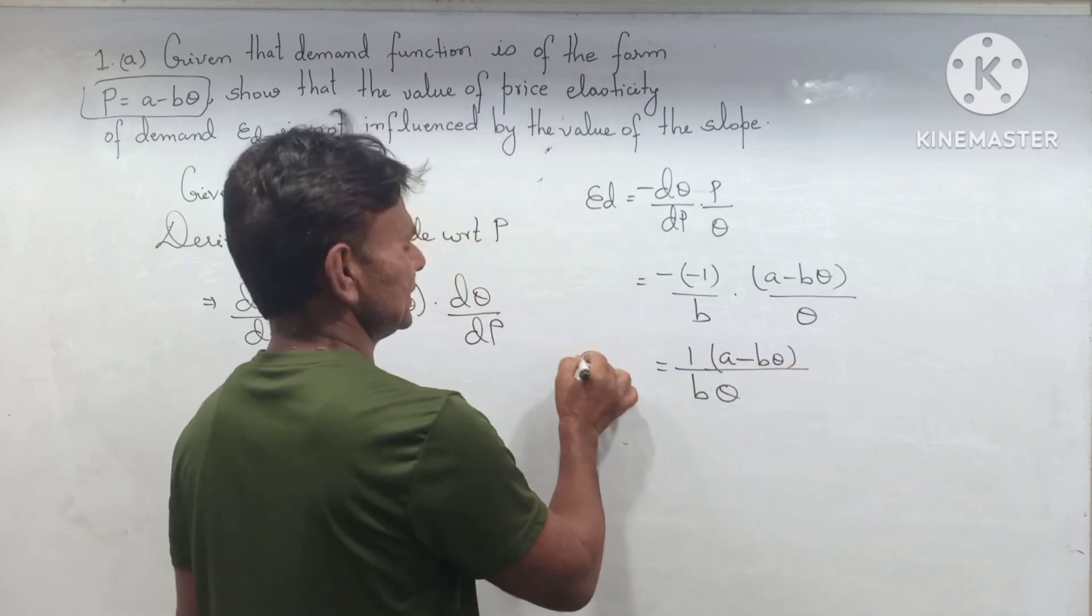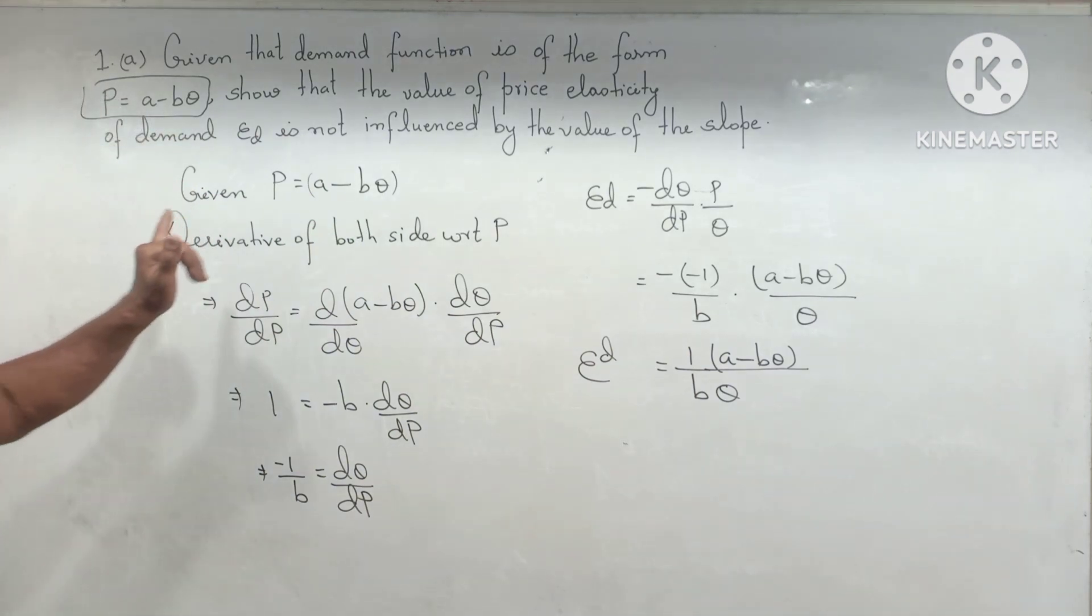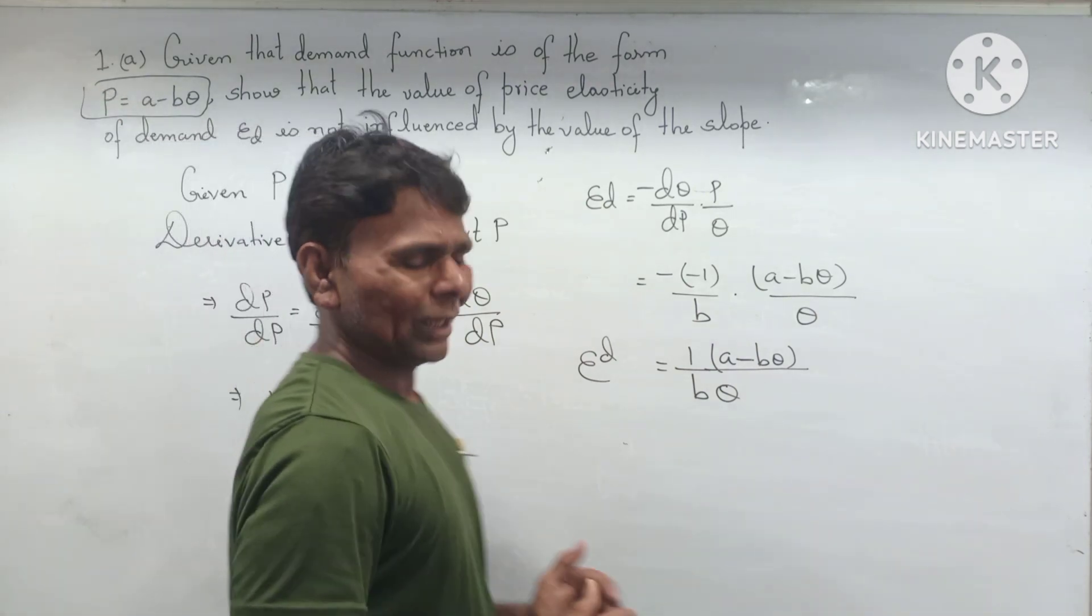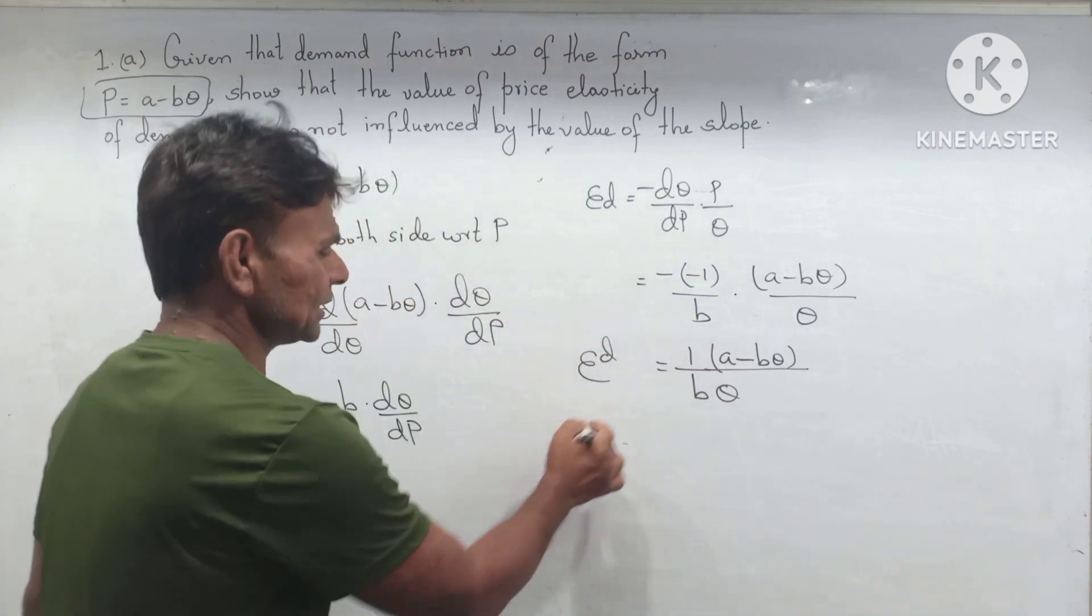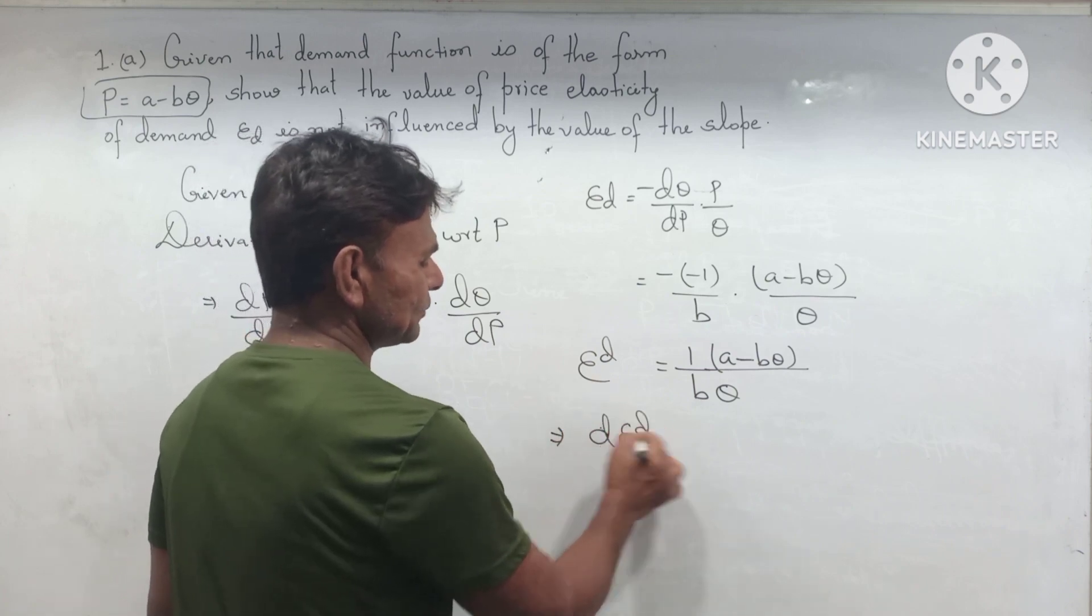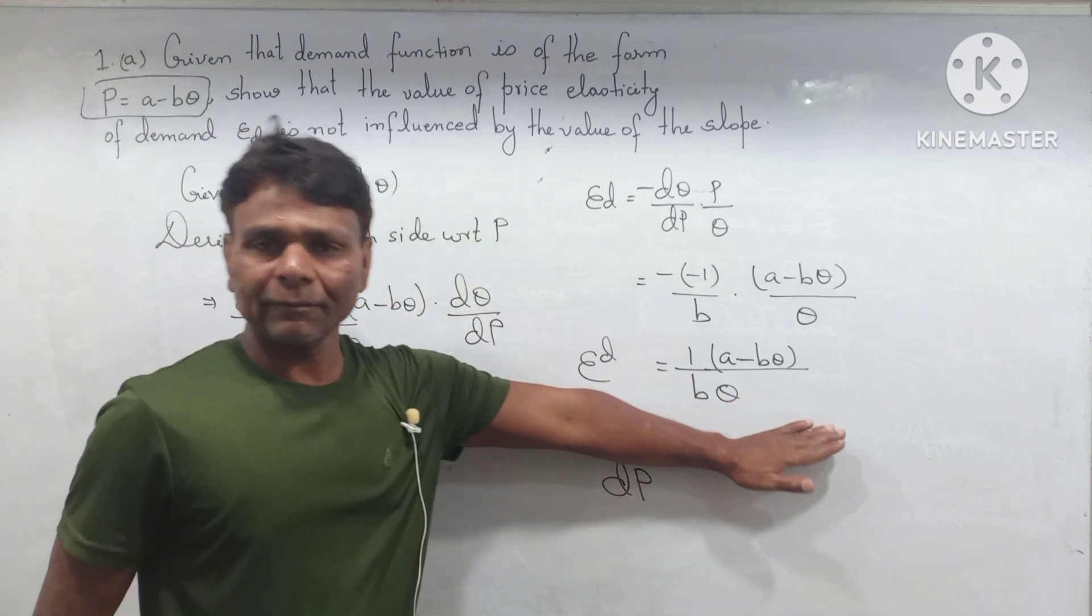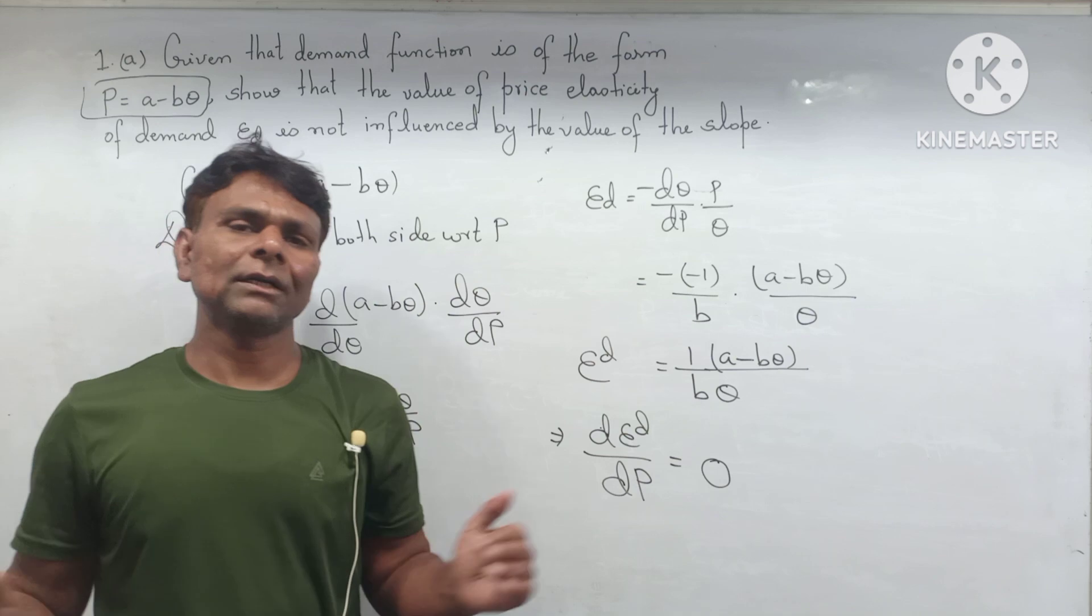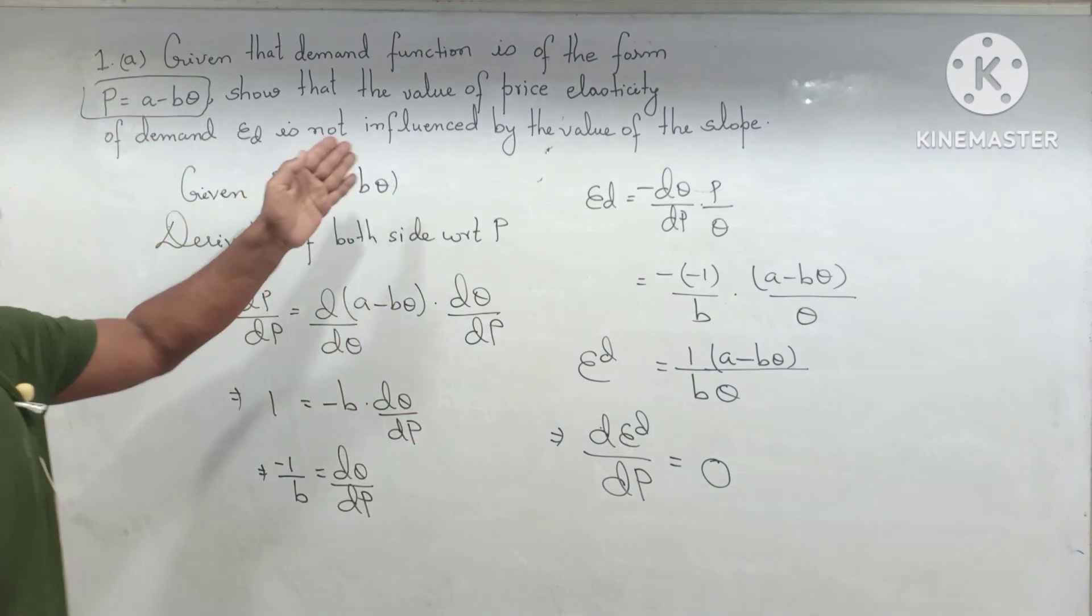This is the elasticity of demand. Price elasticity of demand ED is not influenced by the slope value. What is the derivative indicating? Just take the derivative of price elasticity of demand with respect to price. If you take the derivative, P does not appear in this figure, equals zero. That means any change in price does not impact price elasticity of demand.